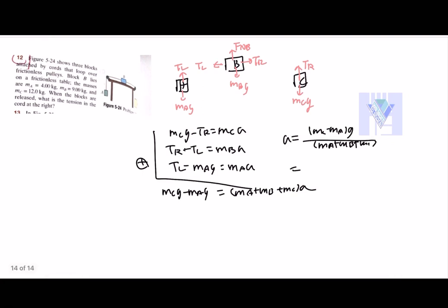Let's substitute the numbers given in the question. For MC, you have 12. For A, you have 4 times 9.8. And you have 4 plus 9 plus 12, which would be equal to 25 and 8 times 9.8.